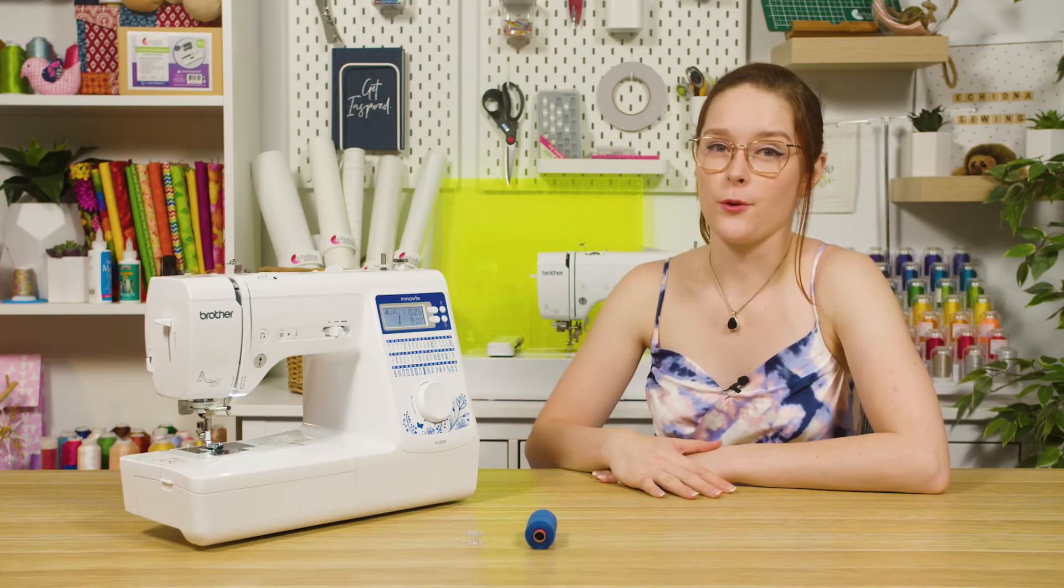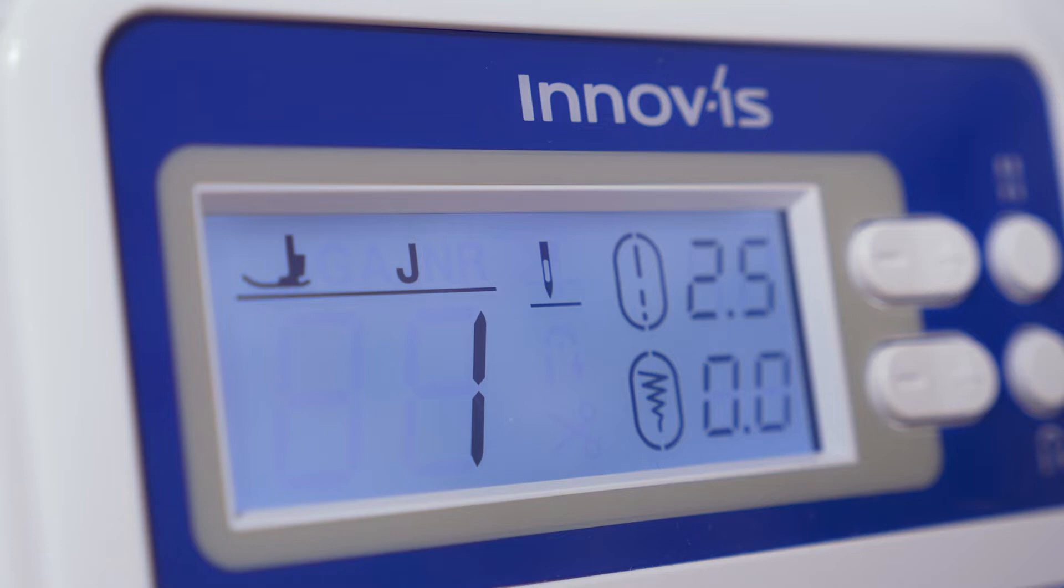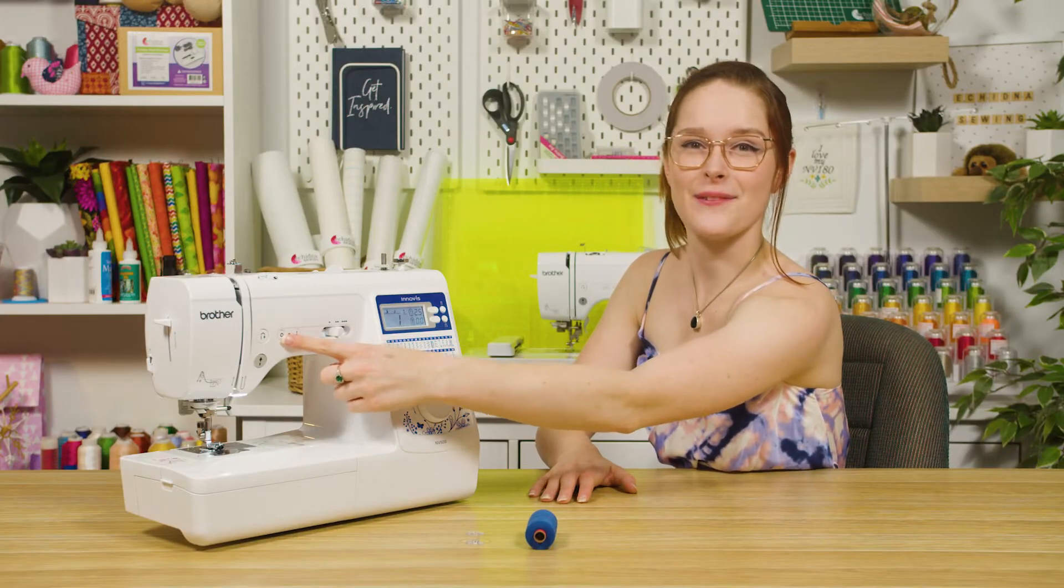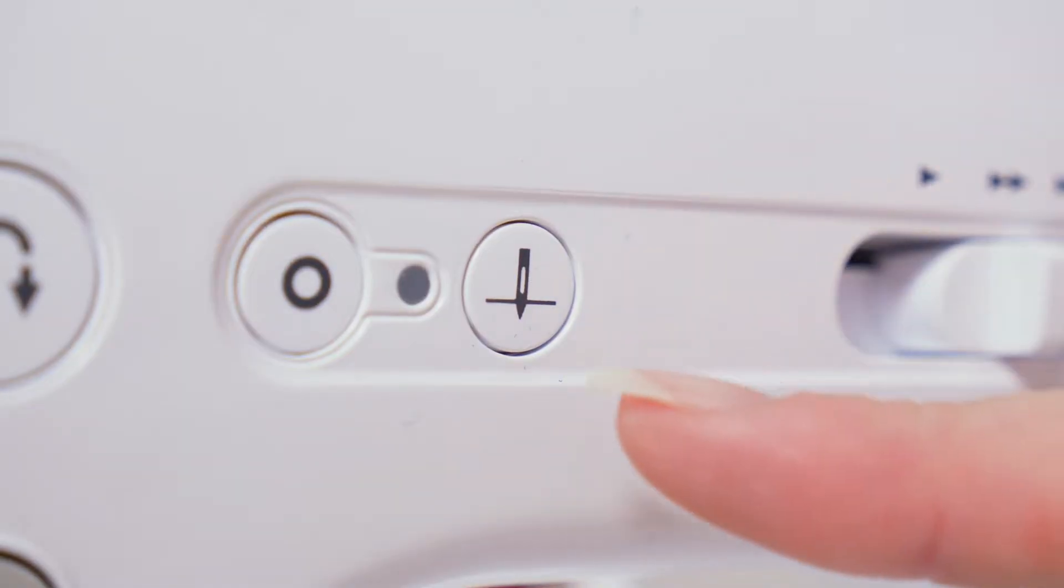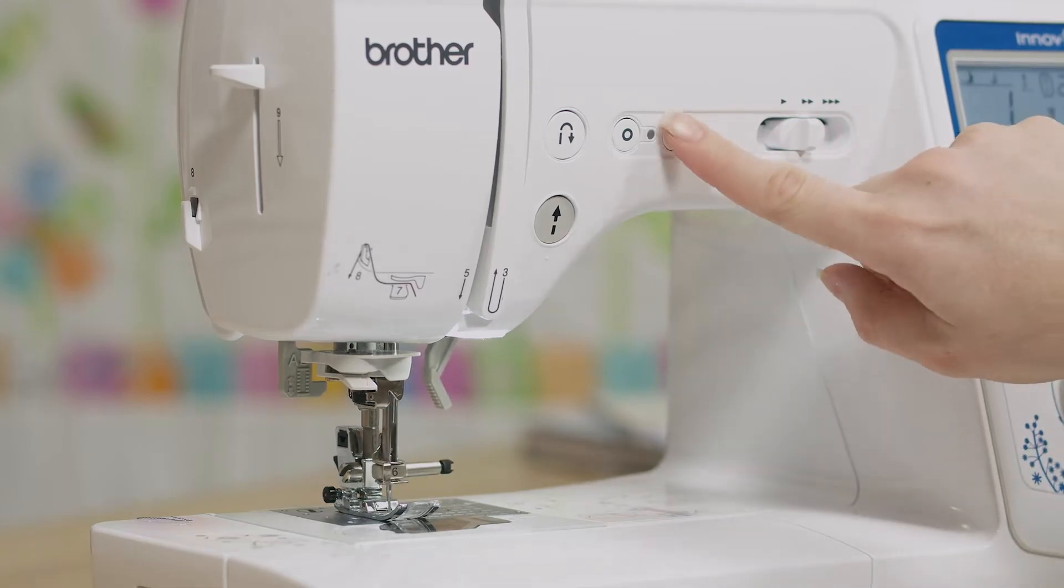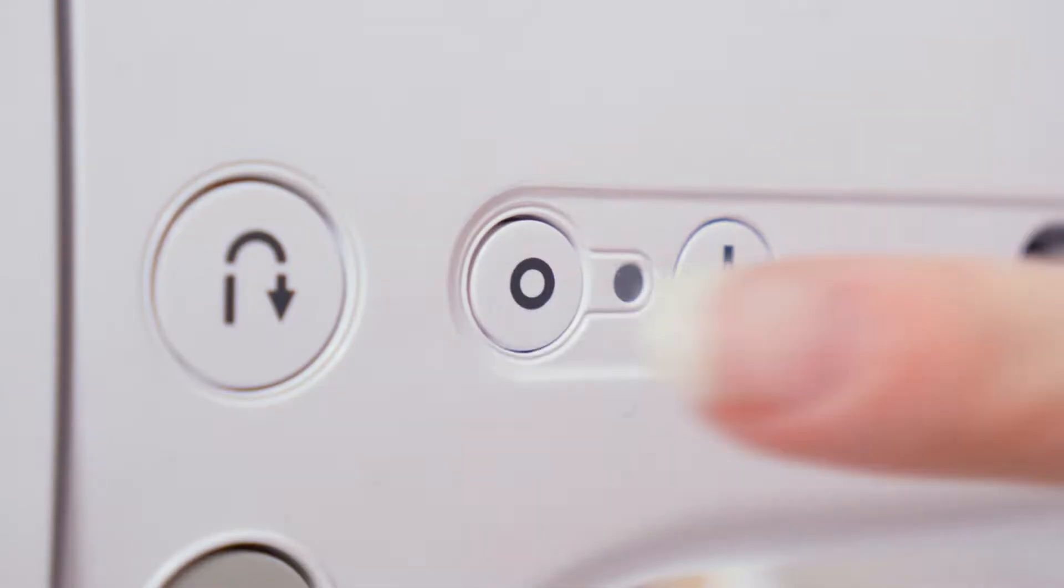Your screen will light up and your needle will move. The LCD screen will then show you the required foot and the recommended stitch width and length. You also have two buttons here: a needle up-down button which moves your needle up and down, and a lock stitch button.